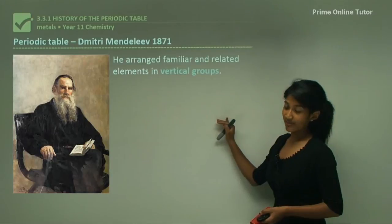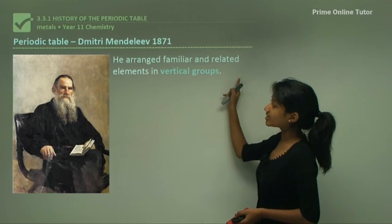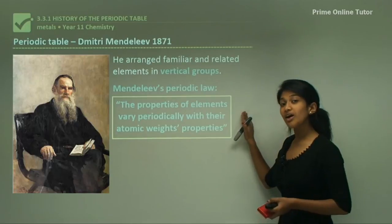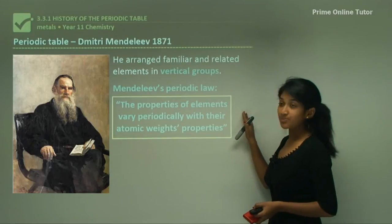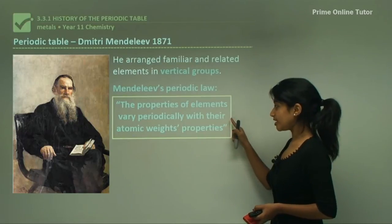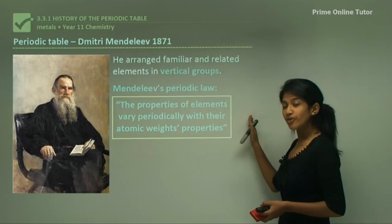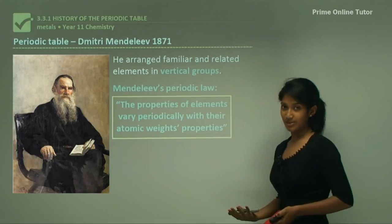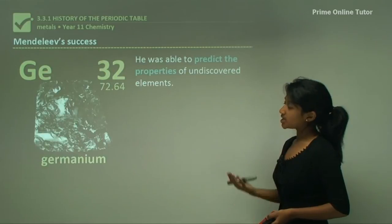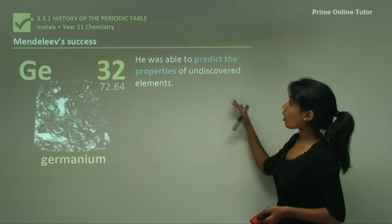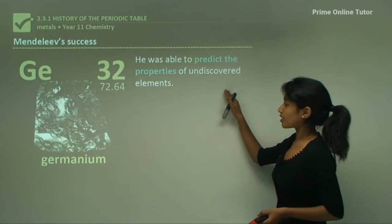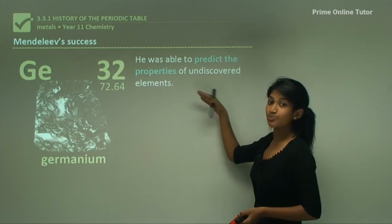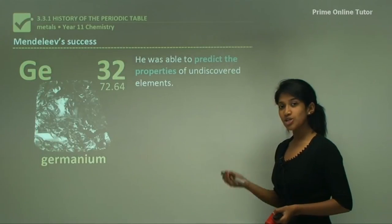Next came Dmitri Mendeleev. Mendeleev arranged familiar and related elements in vertical groups and also proposed a periodic law. His periodic law stated that the properties of elements vary periodically with their atomic weight. So elements that go across periods — in other words rows — vary, while grouped elements have similar chemical properties. His great success was the ability to predict the properties of undiscovered elements, because many elements had not been discovered at that time.